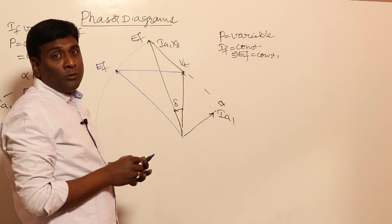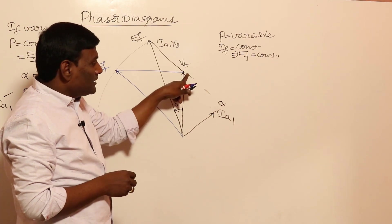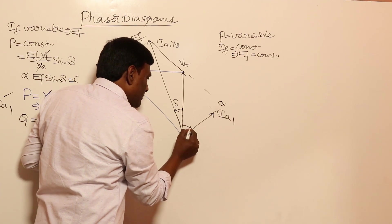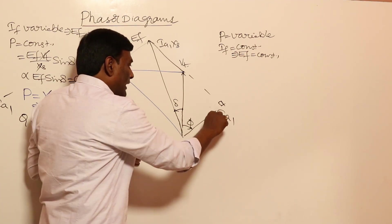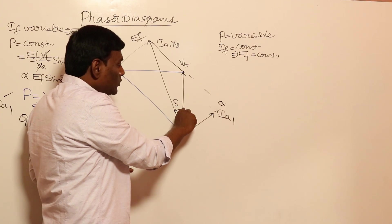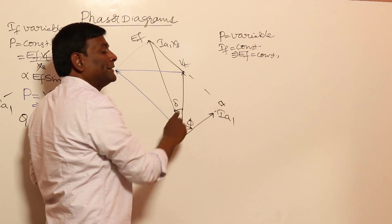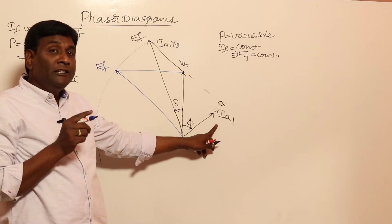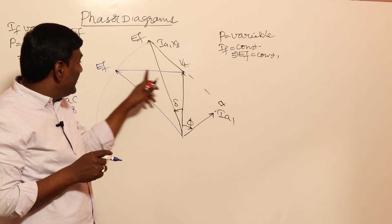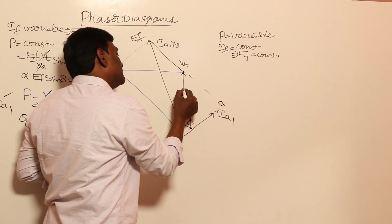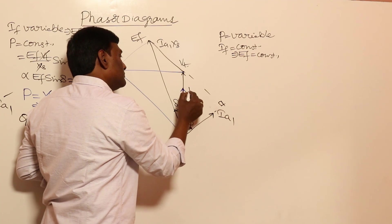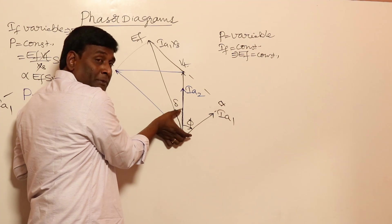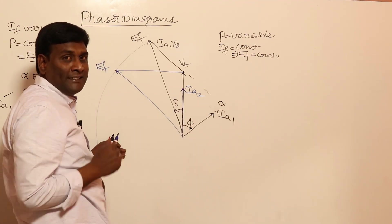Since P increases, Ia cos φ must increase. Ia2 is found at 90 degrees to the Ia2 axis, positioned so that Ia2 cos φ2 is greater than Ia1 cos φ1, reflecting the increased output power.